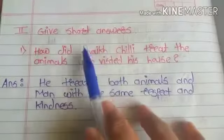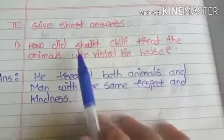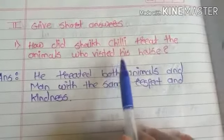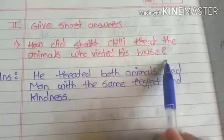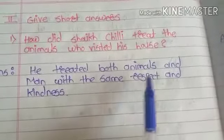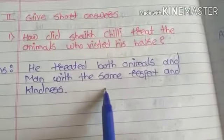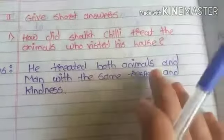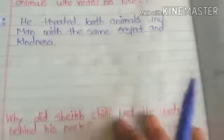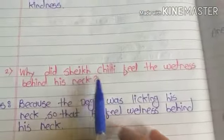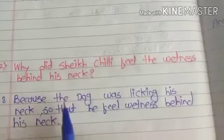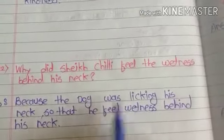Short answers: How did Sheikh Chilli treat the animals who visited his house? He treated both animals and people with the same respect and kindness. Why did Sheikh Chilli feel wetness behind his neck? Because the dog was licking his neck, so he felt the wetness.